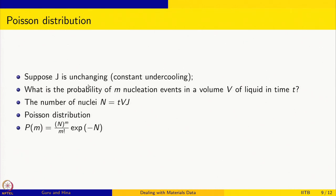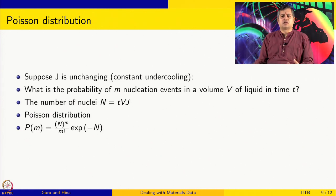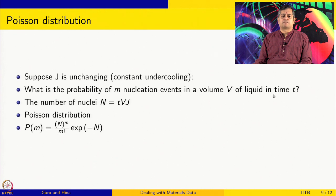Assuming J is constant — that is, there is constant undercooling — we ask: what is the probability of m nucleation events in a volume V of liquid in time T? The expected number of nuclei is N = T × V × J, since J is per meter cubed per second. Multiplying by volume and time gives the number of nuclei, and this probability is described by the Poisson distribution.